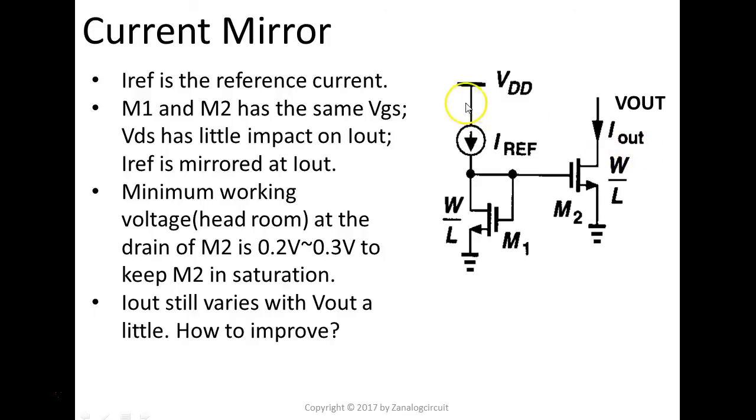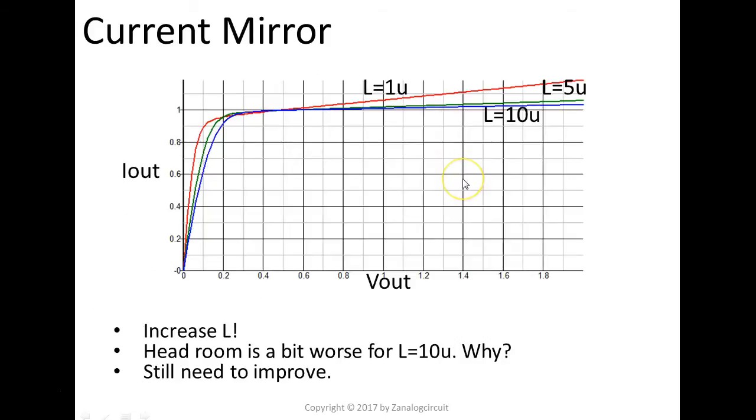But we still find out that, I'm going to show you a curve, actually even with a structure like this, the Iout still varies a little with Vout. Even as I said, VDS has very little impact on Iout, but still we see a little bit of Vout dependency. How to improve on that? The answer is to increase L.